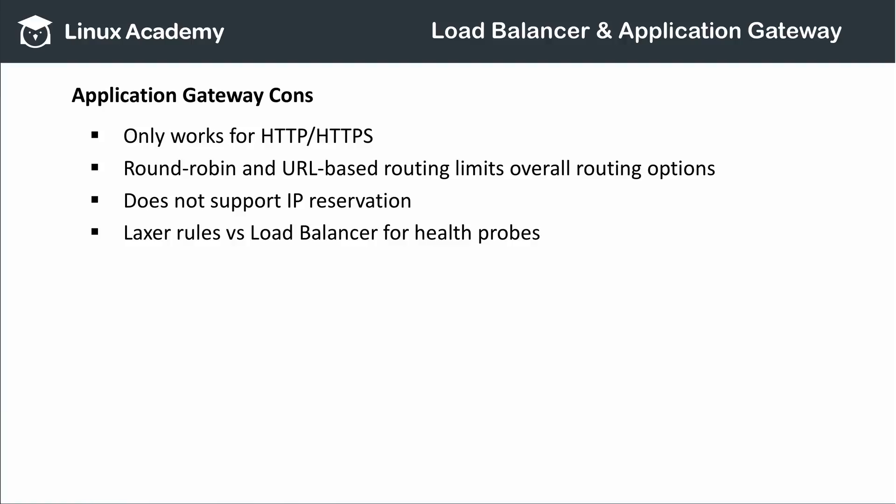There are some drawbacks to Application Gateway. Because it works at the application level, it only works for HTTP or HTTPS requests and therefore isn't very flexible. Routing is primarily done via round-robin, so you don't have a lot of say over which virtual machine handles each request. You can't use a reserved IP address with an Application Gateway — your virtual network or cloud service must use a dynamic IP address. Load balancers also have stricter rules about dead endpoints: Application Gateway gives a VM up to 30 seconds to respond and takes it offline after 5 failed live traffic requests, whereas load balancers consider an endpoint idle after 15 seconds and take instances offline after 2 failed live traffic requests.